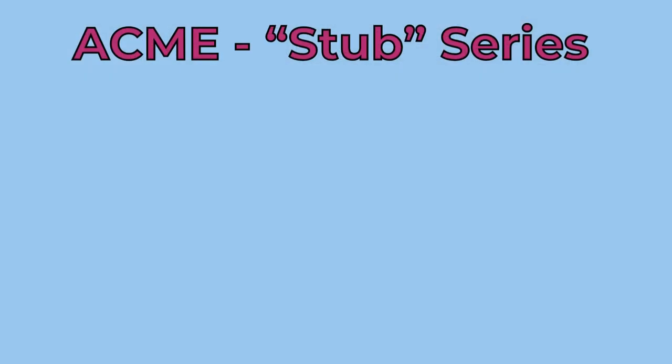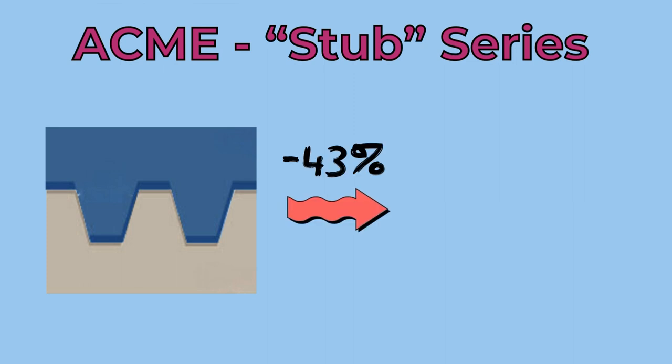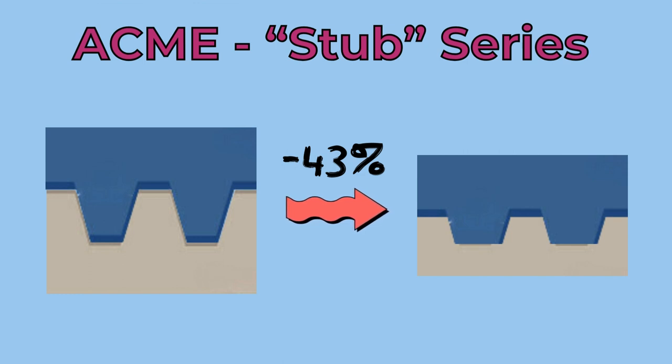There is an additional series called stub. They have a shallower profile, with a 43% shorter stub height, and are used in applications with limited space. It is defined separately in ASTM B1.8.